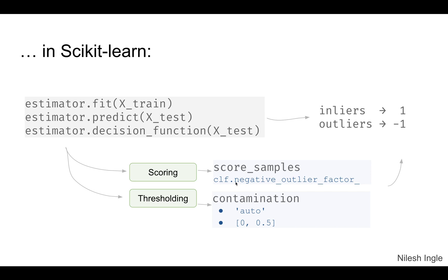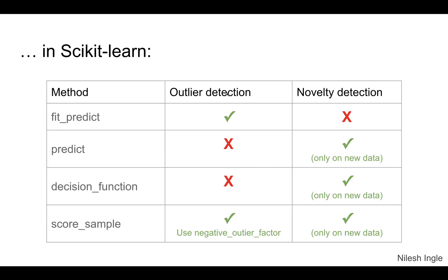For outlier and novelty detection, these are the methods available. fit_predict is available for outlier detection, whereas predict by itself and decision_function is available for novelty detection, and then we can get the scores for both of these.